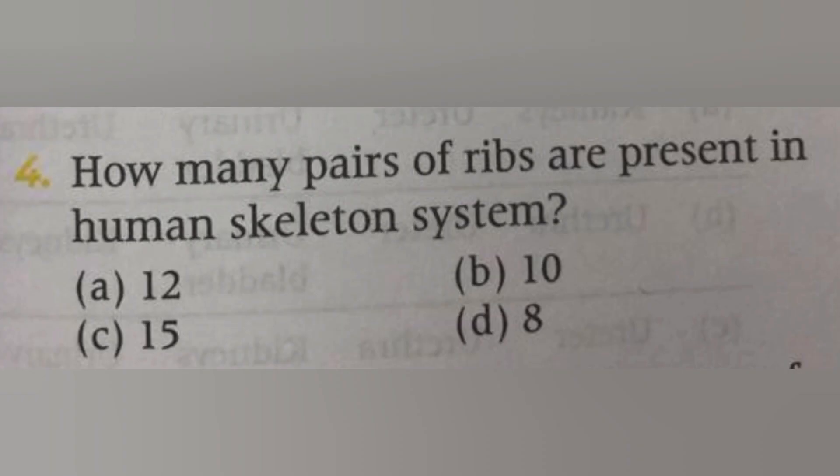Next, how many pairs of ribs are present in the human skeletal system? Options: 12, 10, 18, 8. The answer is 12. Twelve pairs of ribs are present in the human skeletal system, which protect our delicate organs like the heart and lungs.